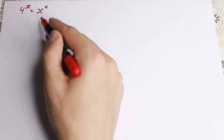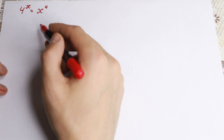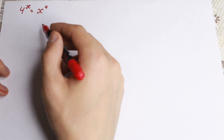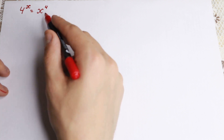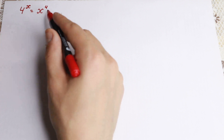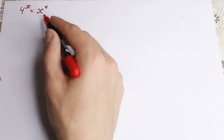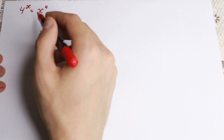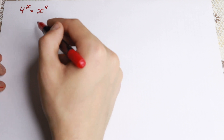But what about the solution? As you can see, we have a 4th power here, so it's not just one solution. We need to find all solutions. A lot of students make this mistake — they say x equals 4, since 4 to the 4 equals 4 to the 4, which is absolutely correct. But let's try to find all solutions.